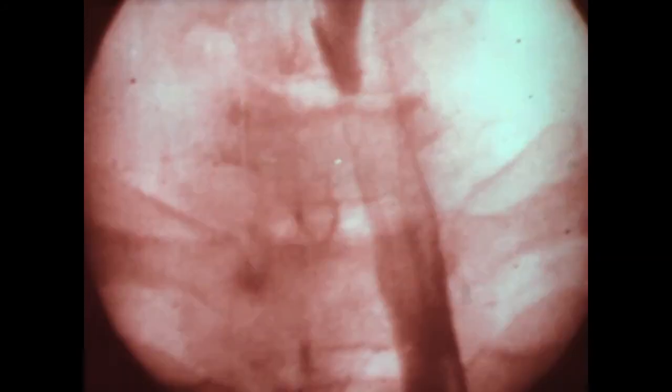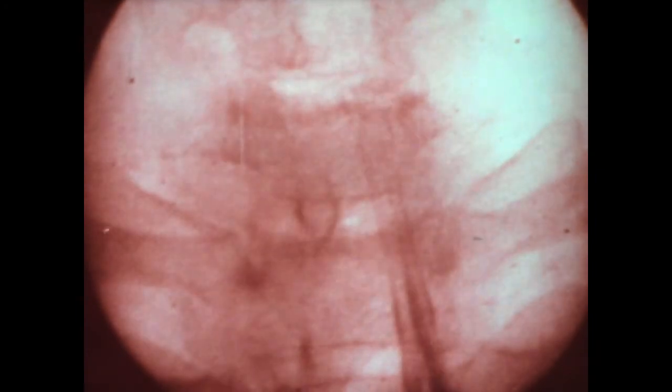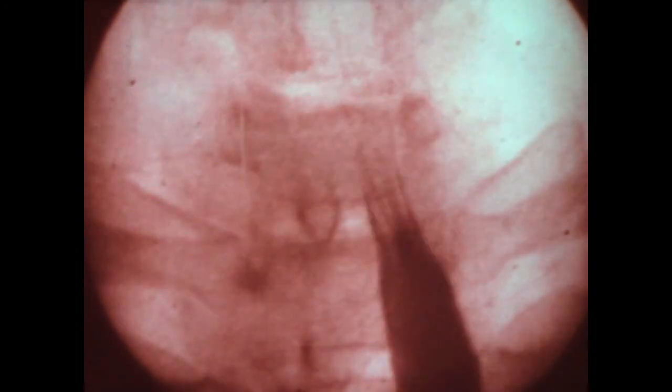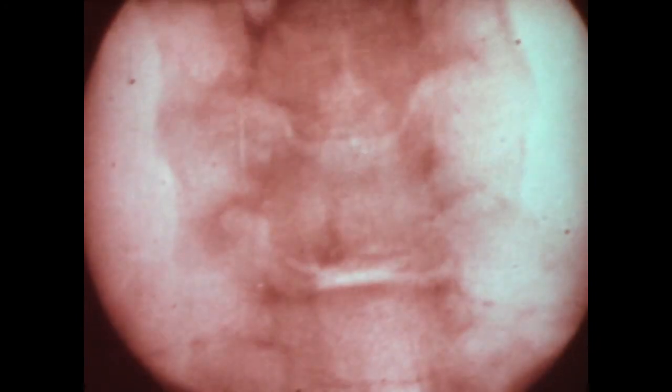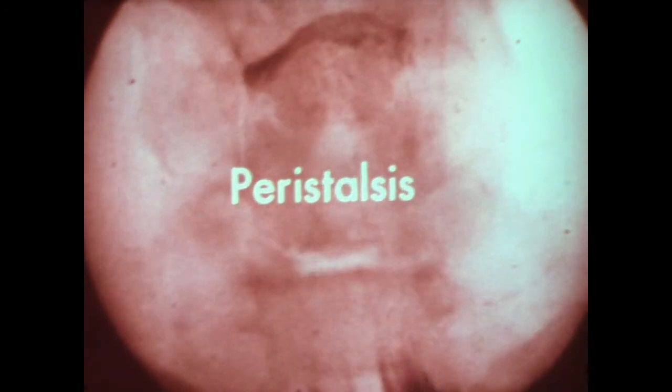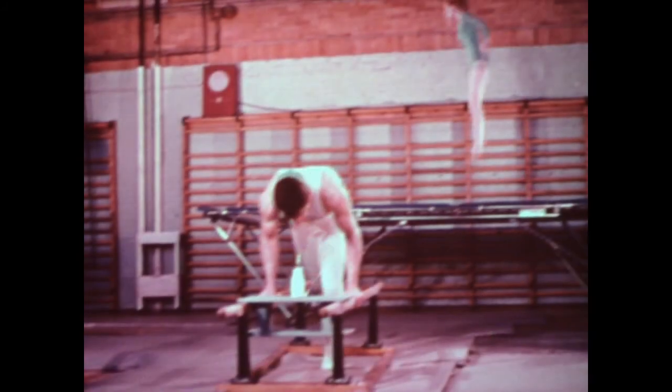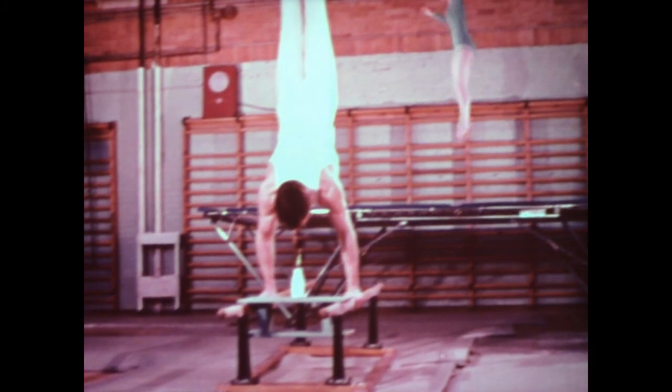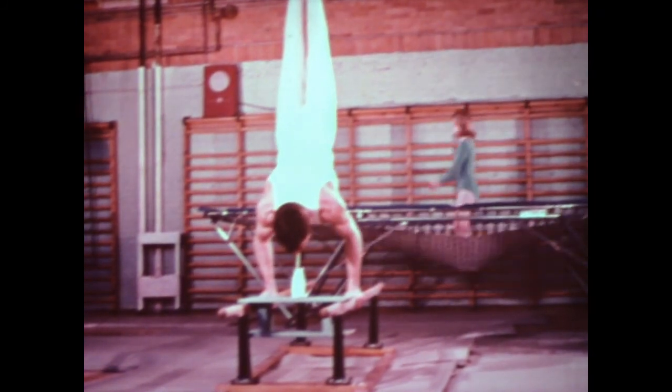This movement of food through the esophagus is accomplished by wave-like contractions of muscles in the esophagus wall. These contractions are called peristalsis. Peristaltic waves push food through the esophagus even against the pull of gravity. For example, food will move toward the stomach when the body is in this position, or even when the body is weightless, as it is during a space flight.